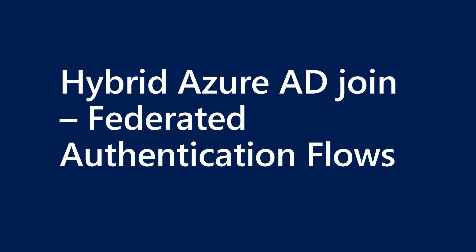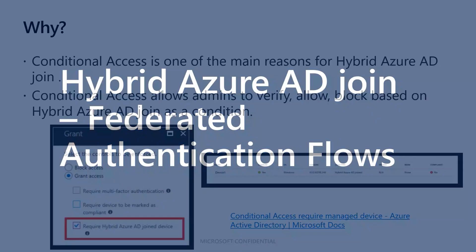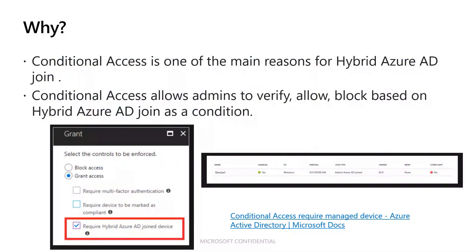Today we are talking about device registration. Can you explain why hybrid Azure AD join is important for organizations and why they should care about it? Good question, Ravi. One of the main use cases is that most organizations are now focusing on zero trust and would like to leverage conditional access policy to explicitly verify. Conditional access is one of the main reasons for hybrid Azure AD join — in your conditional access policy, you can leverage required hybrid Azure AD joined devices to control cloud apps to be accessed only using a managed device.